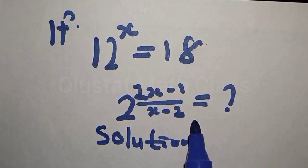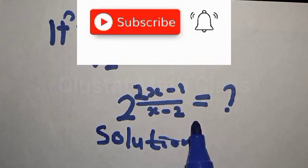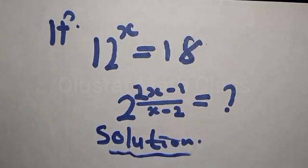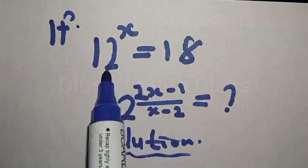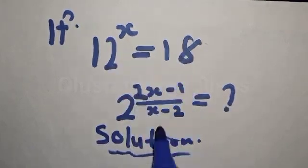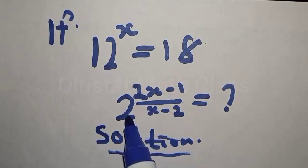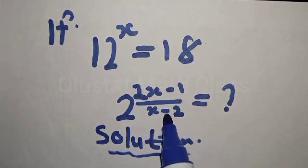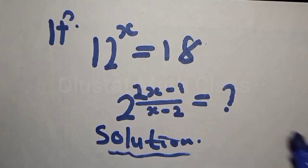Please don't forget to like, share, comment, and subscribe. Solution: from the question we are given 12 raised to power x equal to 18, and we have 2 raised to power (2x minus 1) over (x minus 2) which is unknown.